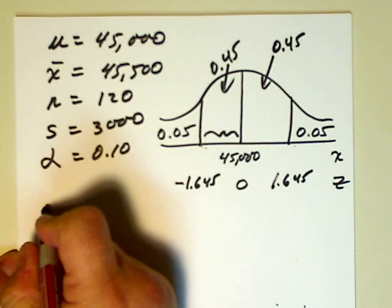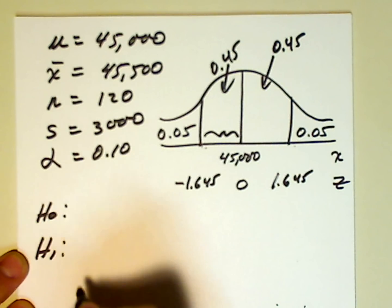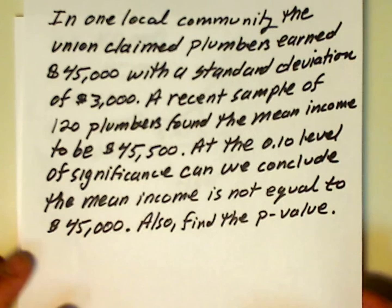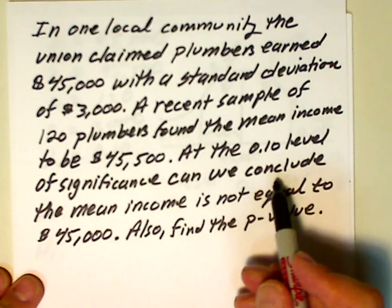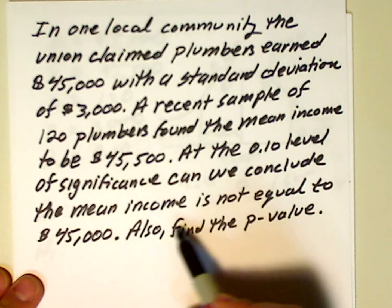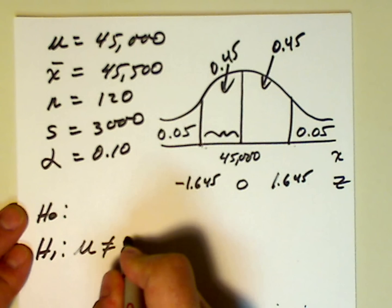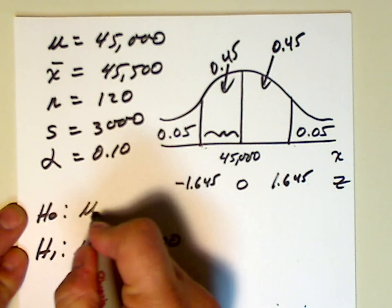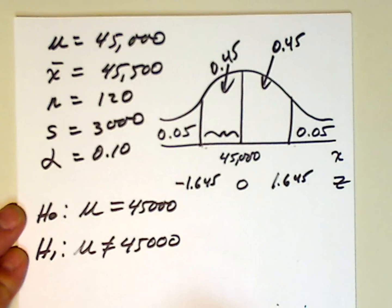So, okay, now we want to write the null and alternate, the alternate H₀ and the null H₁. We always do the alternate first, and that's the question that's being asked. At the 10% level of significance, can we conclude mean income is not equal to $45,000? So, μ is not equal to $45,000, and the alternate is just the opposite. So, μ is equal to $45,000.